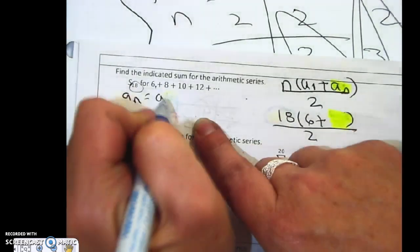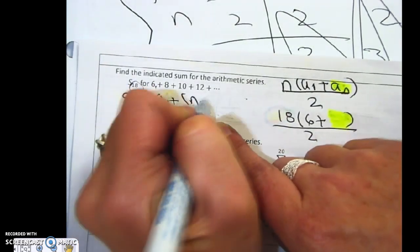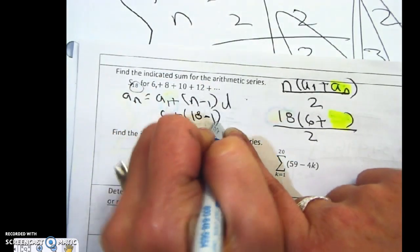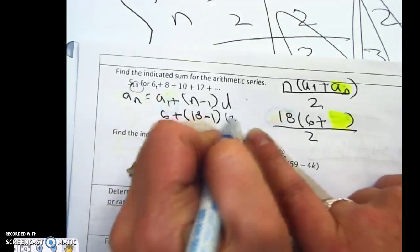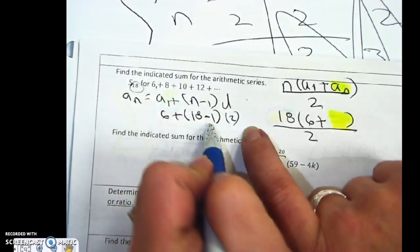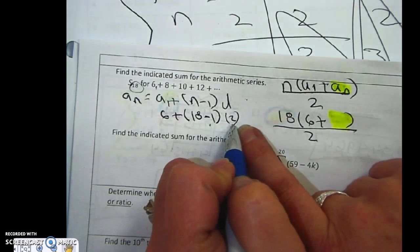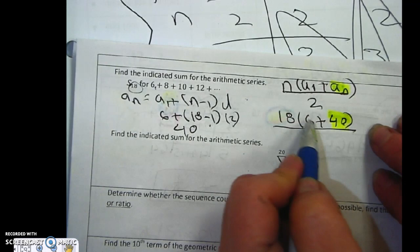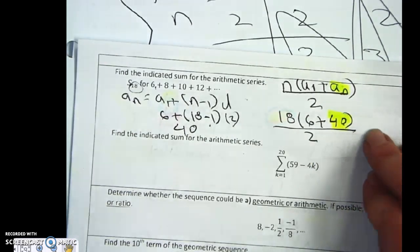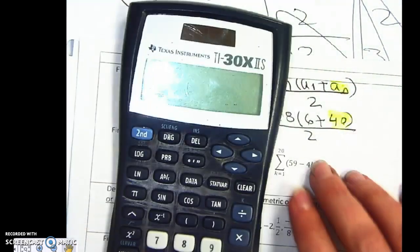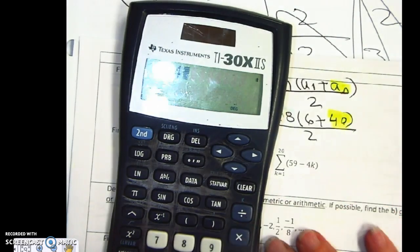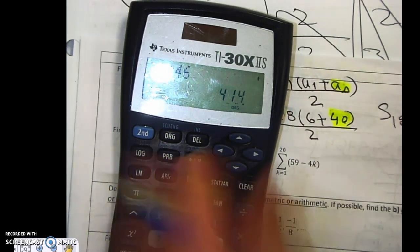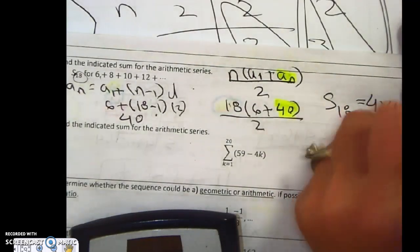You've got to use the formula a sub n equals a1, n minus 1 times d. My first term, trying to find my 18th term, and my pattern is 2. 18 minus 1 is 17, times 2 is 34, plus 6 is 40. That means 40 goes in there. 40 plus 6 is 46. I'm going to go 18 divided by 2 which is 9, times 46. So the sum of my first 18 numbers is 414.